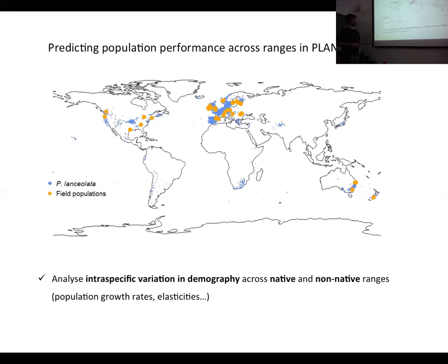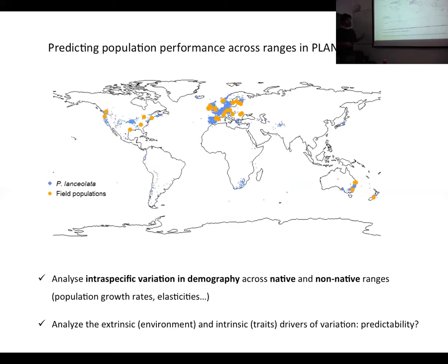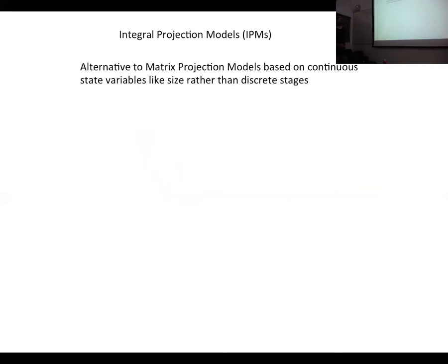One of the objectives of this study is to analyze interspecific variation in demographic rates for Plantago lanceolata across native and non-native ranges. We could focus on population growth rates, vital rates, elasticities of vital rates — meaning the importance of each vital rate for population growth — and also analyze the extrinsic and intrinsic drivers of demographic variation, including environmental predictors and individual functional traits.